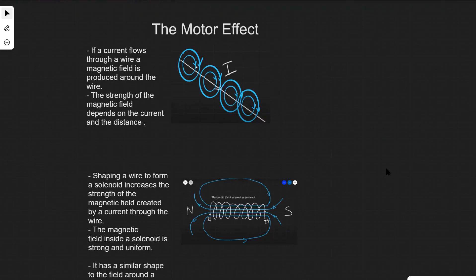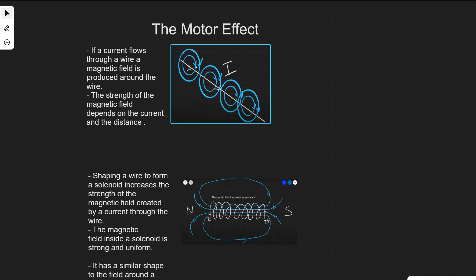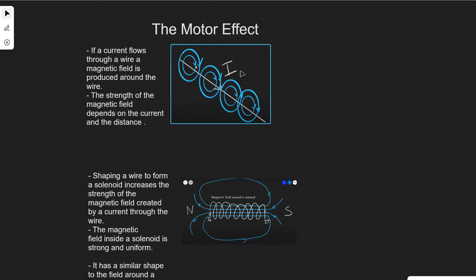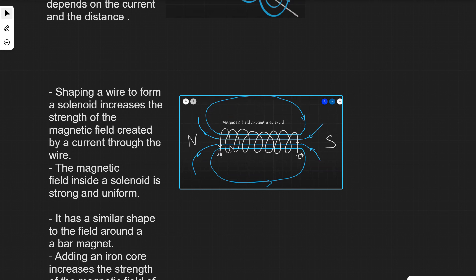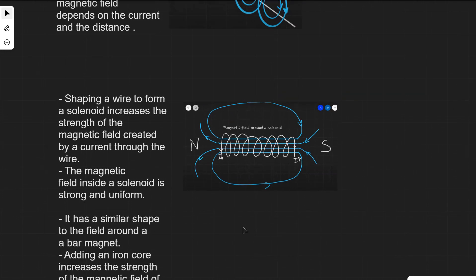Now let's talk about the motor effect. If we have a current-carrying wire, a magnetic field is produced around it — the field lines are just circles around the wire. The strength of the magnetic field depends on the current: if the current is higher the field will also be stronger, and it also depends on distance. If we reshape this wire and turn it into a coil — making a load of loops — this can also be known as a solenoid, and this will increase the strength of the magnetic field.